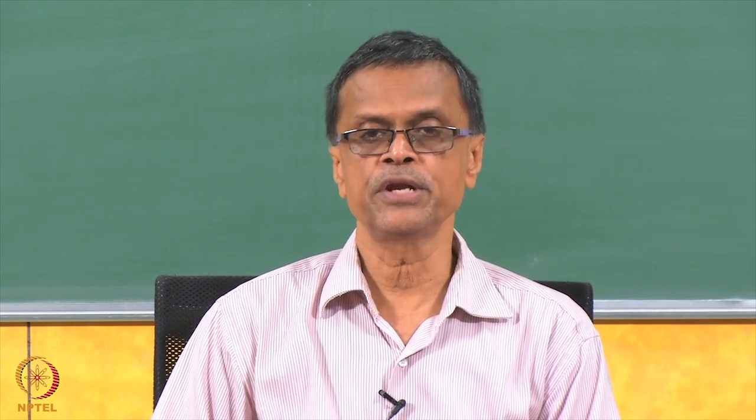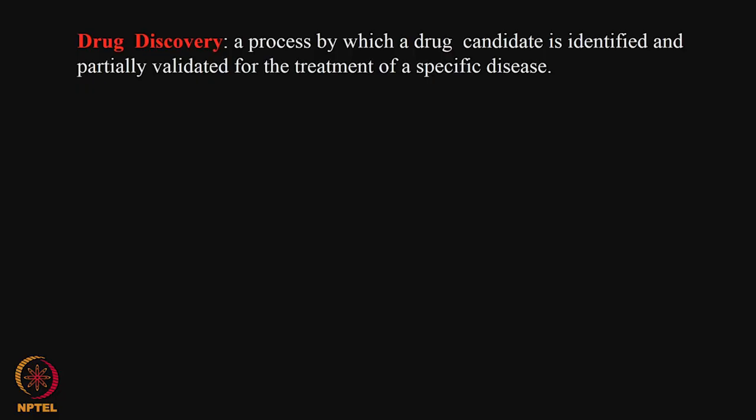Hello everyone. We will continue the course on computer-aided drug design and talk about some of the issues in the drug discovery process. Drug discovery is a process by which a drug candidate is identified and partially validated for the treatment of a specific disease — partially validated because it becomes a drug only after it gets approval from the FDA, the Food and Drug Administration of the USA. To get approval you need to go through preclinical trials involving animals and then human volunteer trials.